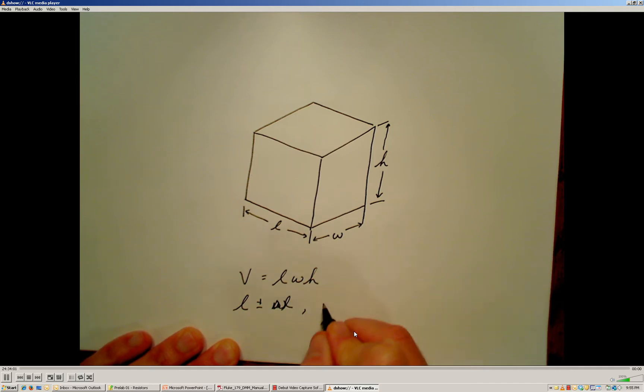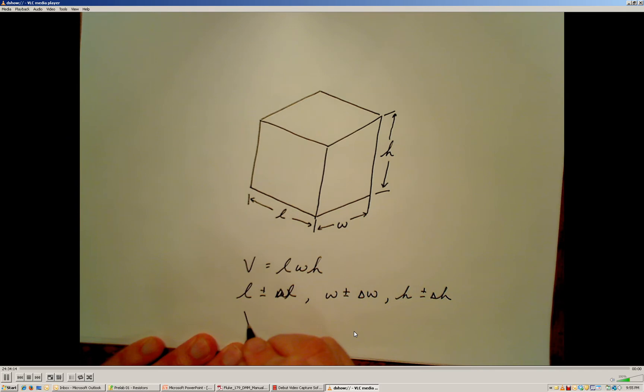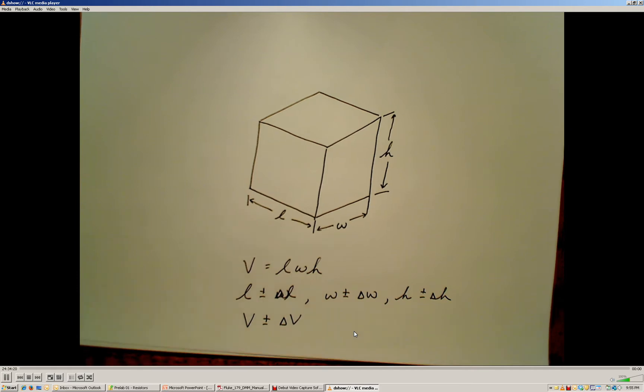The width is known with some uncertainty, delta W, and the height is known with some uncertainty in it. Okay, how do we combine these uncertainties to determine ultimately what the variability, the most likely variability, is going to be in the volume? And that is the concept of propagation of uncertainty that we need to discuss.